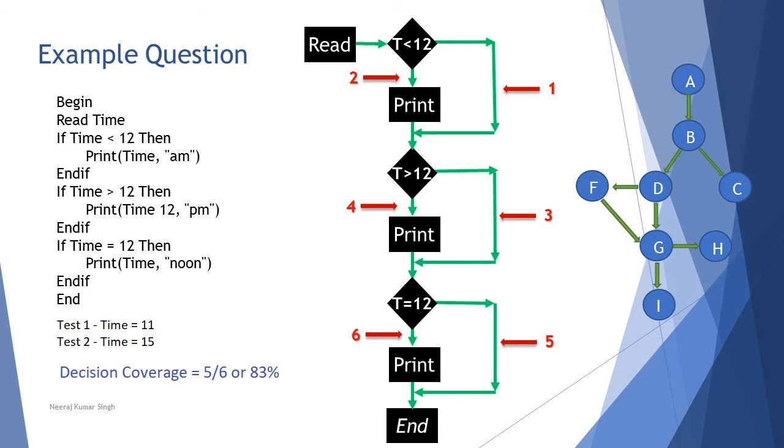On the side, if you go ahead with the execution and take the first test, that is time is less than 12, which is 11. If you try with that, it will follow number 2, number 3, and number 5, because it will be met only for the first condition, which is less than 12, but not met for the other two conditions. So 2, 3, 5 is covered out of six decisions.